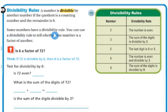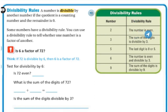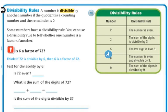Some numbers have a divisibility rule, and if you know these rules, you can use them to tell whether one number is a factor of another — it will make it much easier with large numbers. For 2, the number is even. For 3, the sum of the digits should be divisible by 3. For 5, if the last digit is a 0 or a 5, then it will be equally divisible by 5.